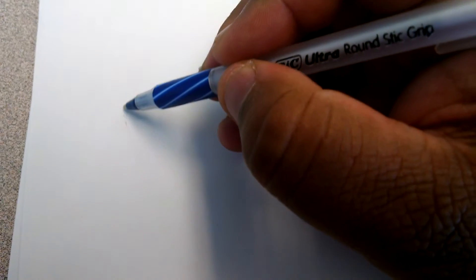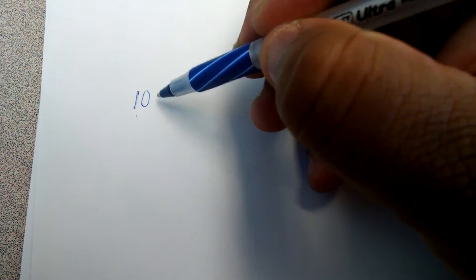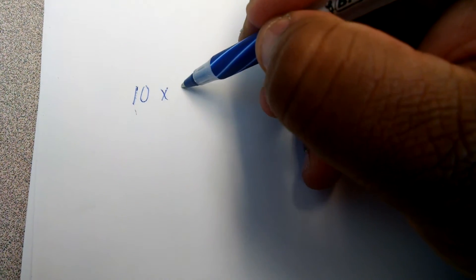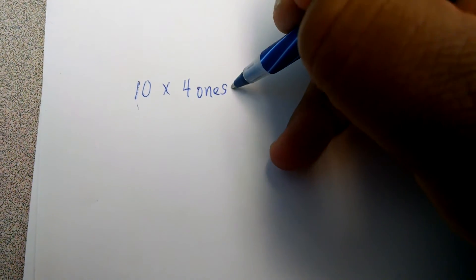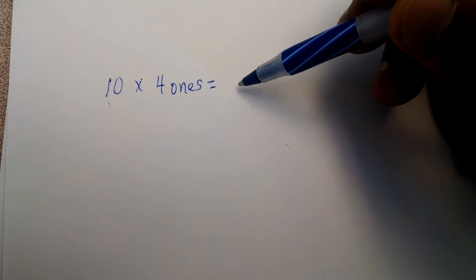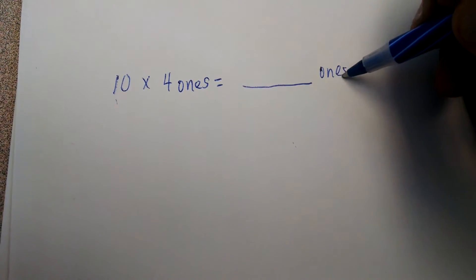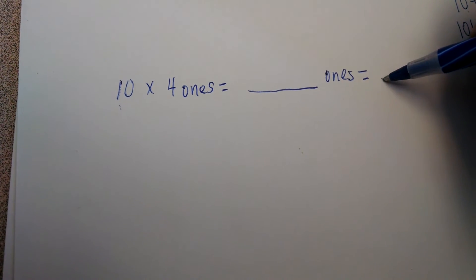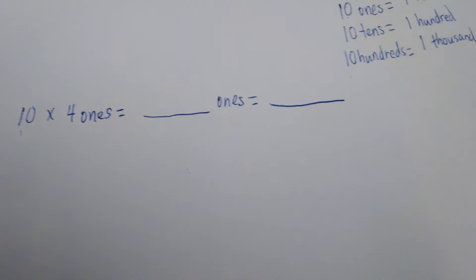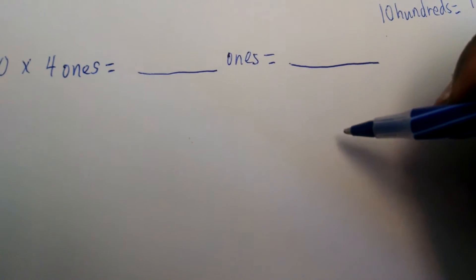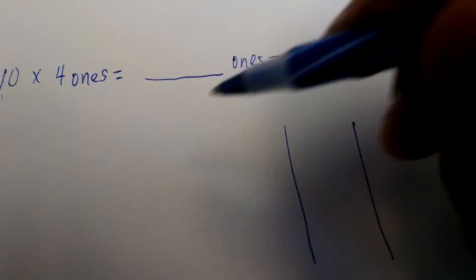An example problem that some of the students have been working on is: if you had 10 times 4 ones, what is that equal to in terms of ones, and if I bundle it, what unit would that become? When I use my chart, I would make a place value chart.